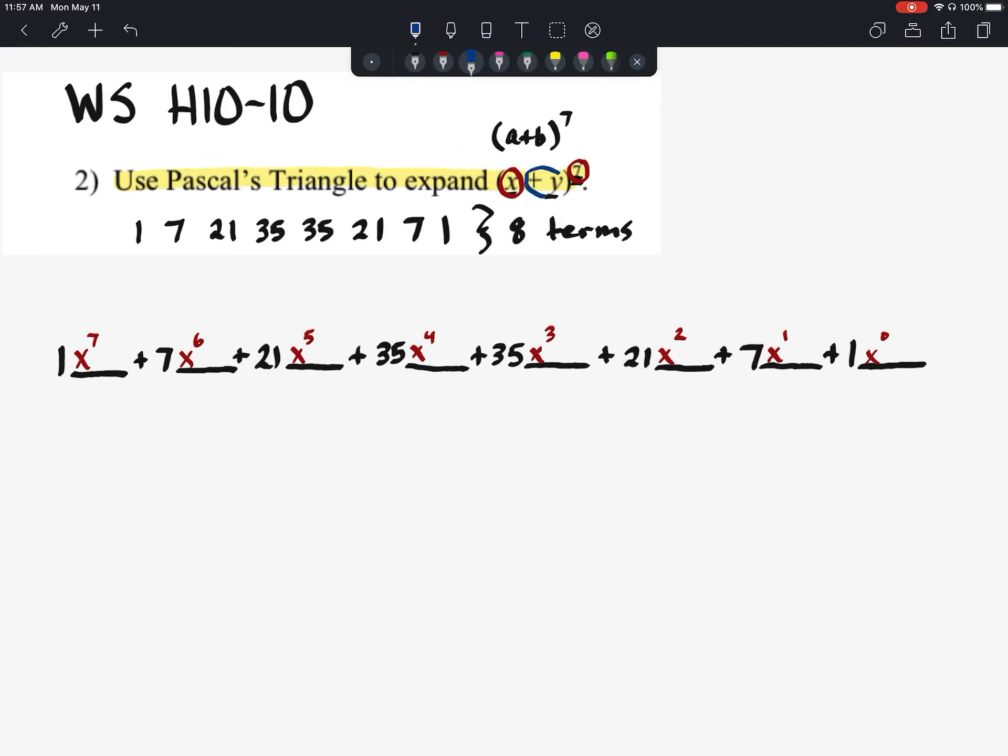For our second term we have a positive y and the exponents on the y's since it's in the back will increase. So we're going to start with y to the 0, y to the 1st, y to the 2nd, y to the 3rd, 4th, 5th, 6th, until you get all the way to the end and it should be 7th.